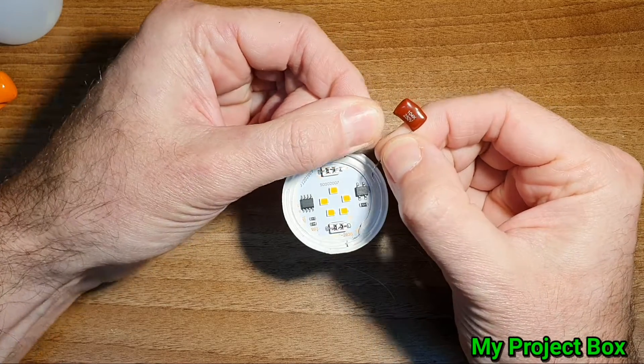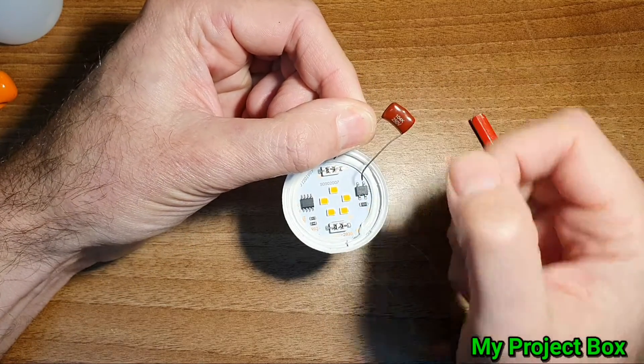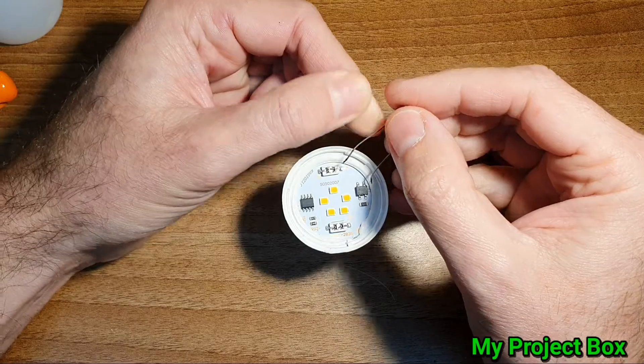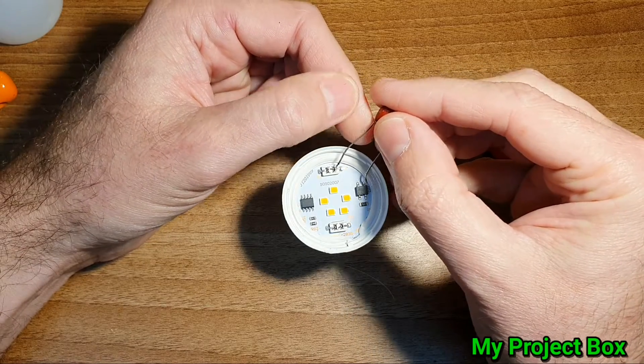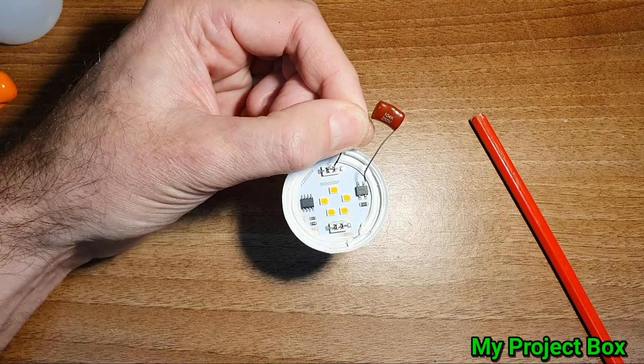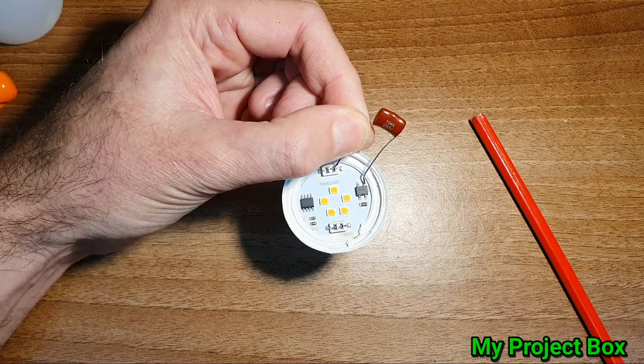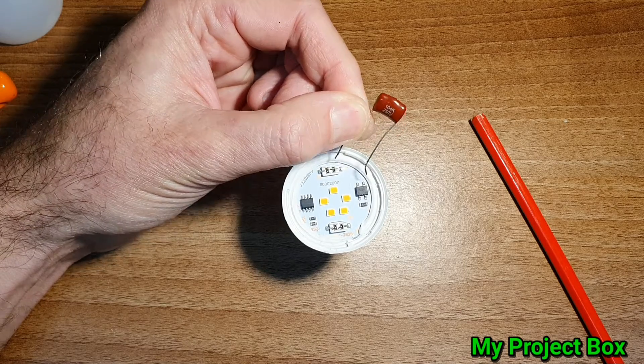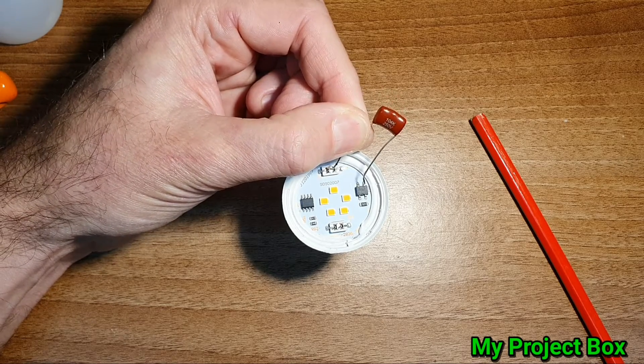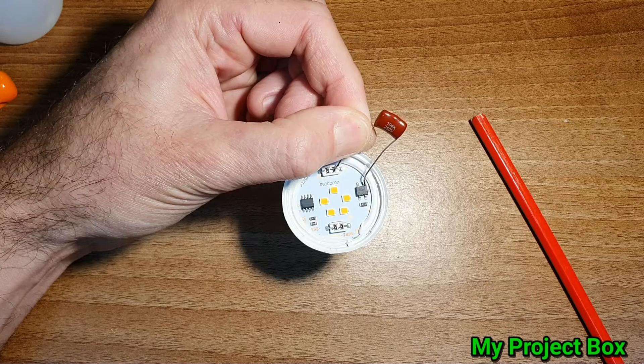But if you use a capacitor, it doesn't do that. It just drops the voltage without generating any heat. So it's a quite efficient way of dropping the voltage to an LED bulb and it's used in lots of cheap LED lamps without generating all that heat and wasting energy.